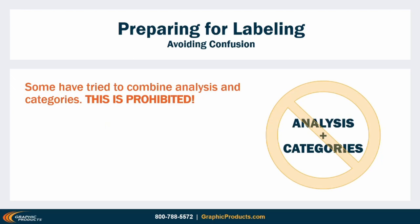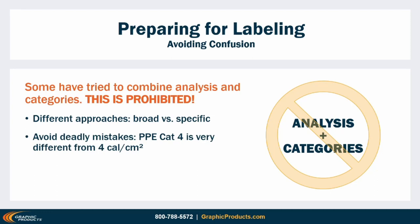In the past, a lot of people tried to use both systems at the same time — calculating the incident energy and then assigning an arc flash PPE category as well. This has been specifically prohibited in NFPA 70E since the 2015 edition. The systems approach their decisions in different ways: PPE categories are based on NFPA's conservative estimates for general scenarios, while incident energy calculations are based on the employer's detailed math for the exact equipment and installation. A PPE category of four means you need an extremely protective space suit; an incident energy of four cal/cm² means you need standard thermal gear and a face shield. A misunderstanding here could be deadly.